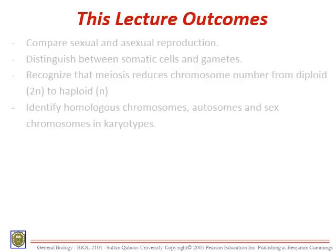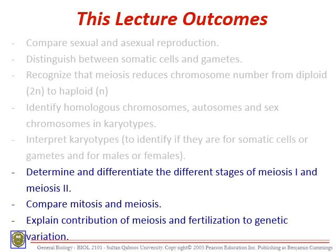Let's have a look at the lecture outcomes. First, we are going to determine and differentiate the different stages of meiosis 1 and meiosis 2. Then we are going to compare mitosis and meiosis in detail after learning the different stages. Finally, we are going to explain the contribution of meiosis and fertilization to genetic variation — how they lead to differences in the genetics of the individual.